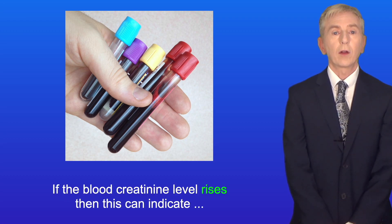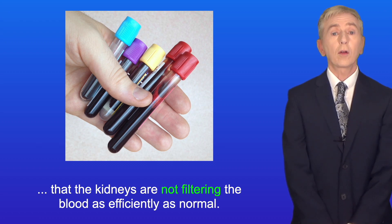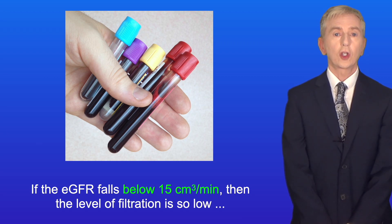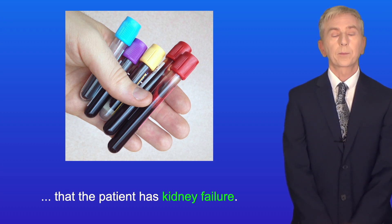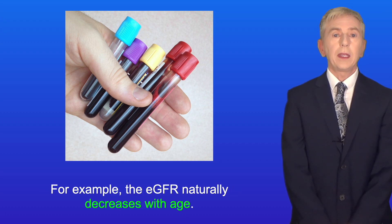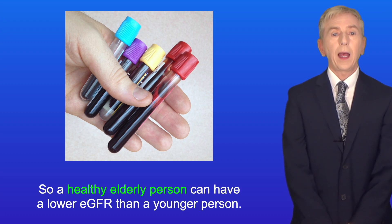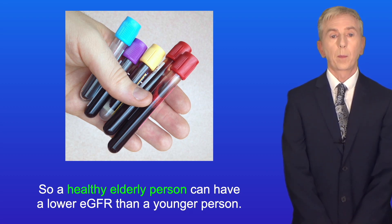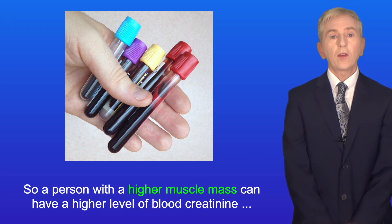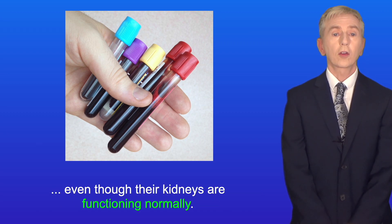Now, if the blood creatinine level rises, then this can indicate that the kidneys are not filtering the blood as efficiently as normal. If the EGFR falls below 15 centimeters cubed per minute, then the level of filtration is so low that the patient has kidney failure. However, other factors can influence the EGFR. For example, the EGFR naturally decreases with age, so a healthy elderly person can have a lower EGFR than a younger person. Also, the level of creatinine in the blood is affected by a person's muscle mass, so a person with a higher muscle mass can have a higher level of blood creatinine even though their kidneys are functioning normally.